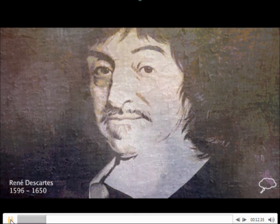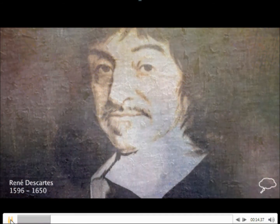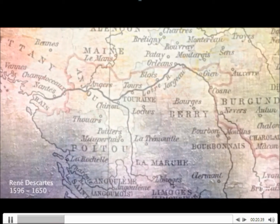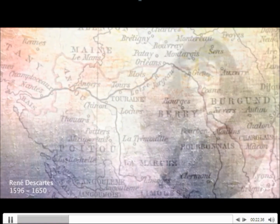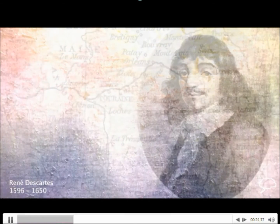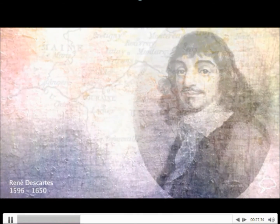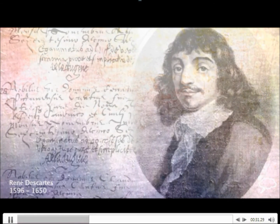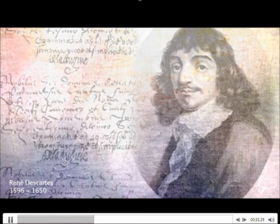Rene Descartes was a French born philosopher who was known as the father of modern philosophy, best known for his quote cogito ergo sum, I think therefore I am. Descartes was born near Tours in France in 1596 and was educated in classics, logic and the philosophy of Aristotle in a Jesuit college in Anjou. He graduated and then studied at the University of Poitiers, obtaining his law license in 1616.